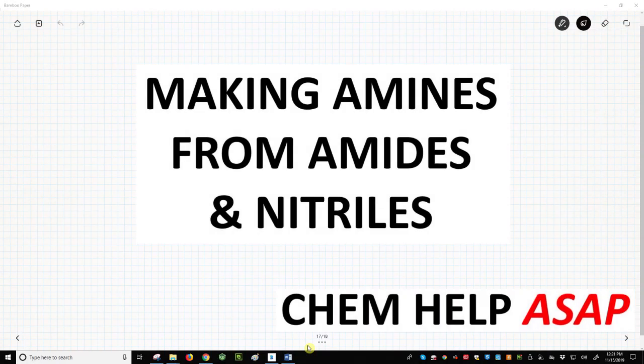Welcome to Chem Help ASAP. Let's make an amine using different acid derivative chemistry. We've learned two methods to make amines: reducing an amide and reducing a nitrile.